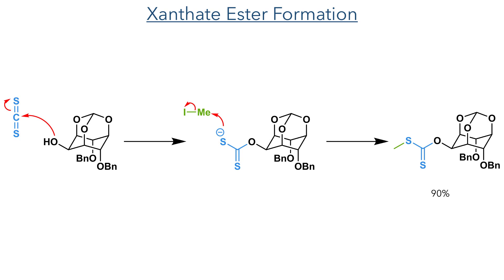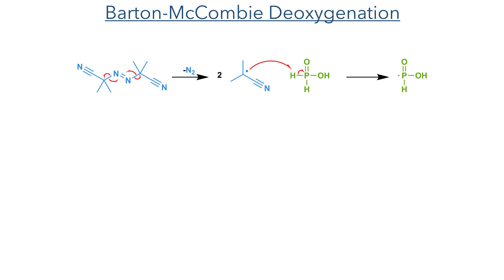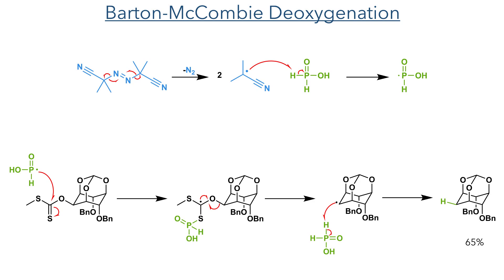With five of the hydroxyl groups now protected, they could selectively deoxygenate the 2-position. To do this, they first formed a xanthate ester with carbon disulfide. This is attacked by the hydroxyl group, and the sulfur anion is then methylated using methyl iodide. They could then carry out a Barton-McCombie deoxygenation. AIBN is first heated to undergo homolytic cleavage, eliminating nitrogen gas to form a radical. This abstracts a hydrogen atom from hypophosphorus acid, and the resulting phosphorus radical attacks the xanthate at the carbon atom, forming a radical stabilised by three adjacent heteroatoms. The carbon-oxygen bond at the C5 position then undergoes homolytic cleavage, leaving a radical on the substrate. Hypophosphorus acid once again acts as the hydrogen atom donor, forming the target compound in a 65% yield.